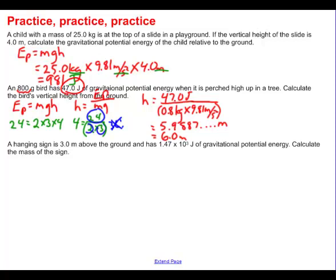A hanging sign is 3.0 meters above the ground. It has 1.47 times 10 to the third joules of gravitational potential energy. Calculate the mass of the sign. Our initial equation says potential energy is mass times gravity times height. What they want us to calculate is the mass.